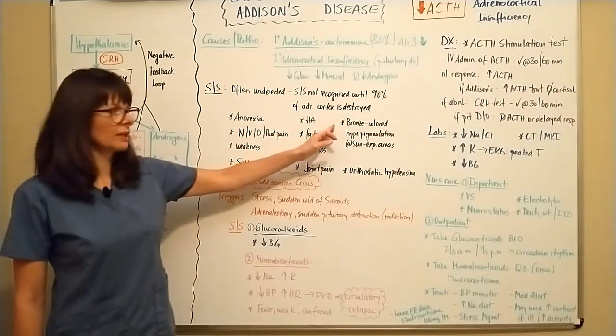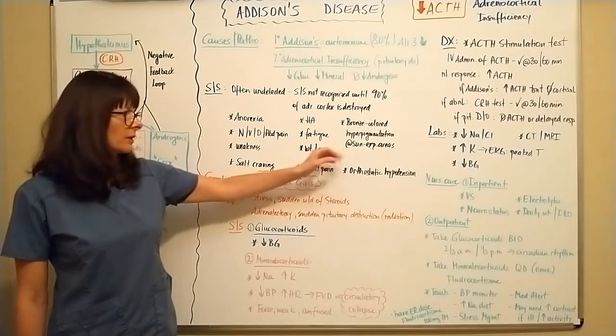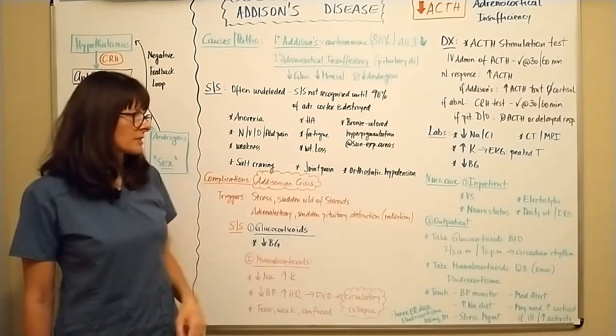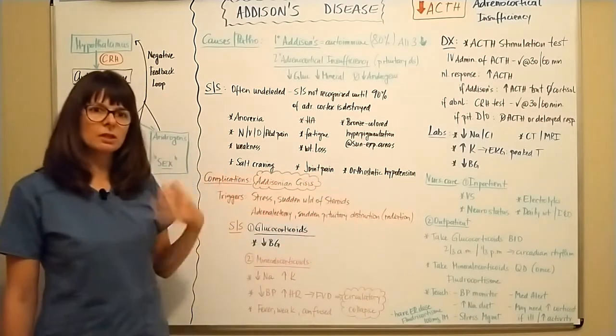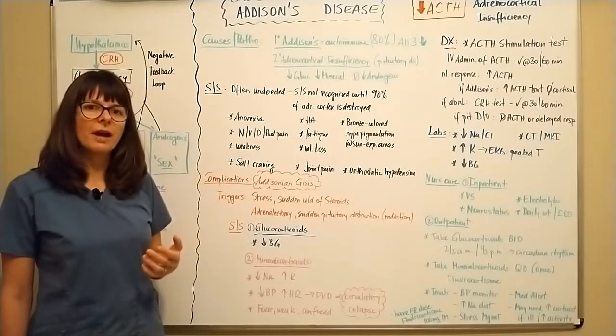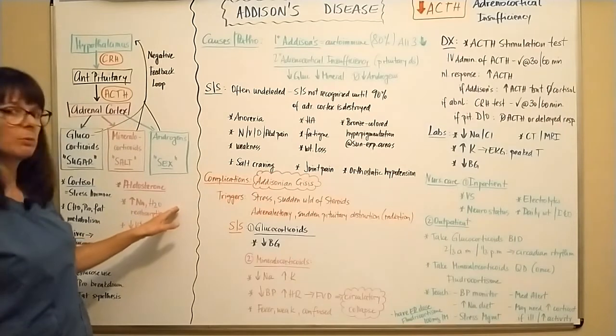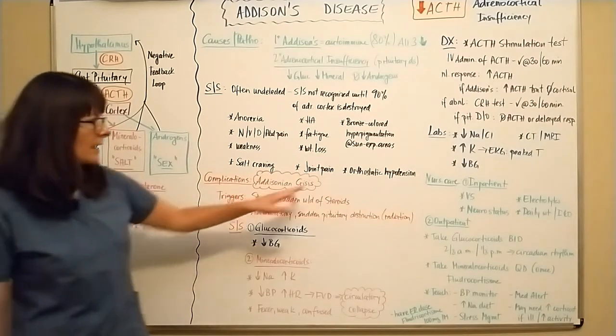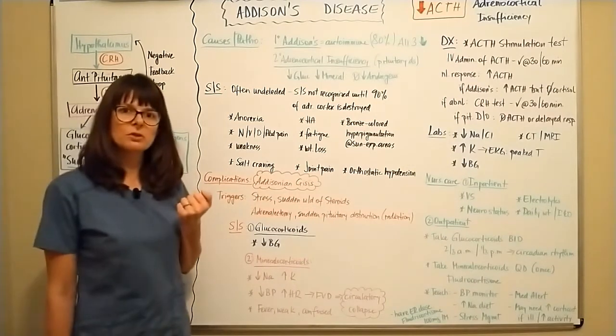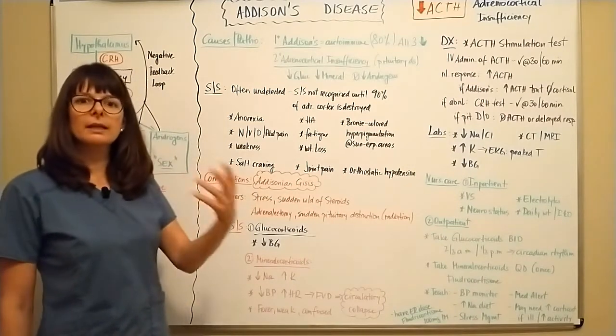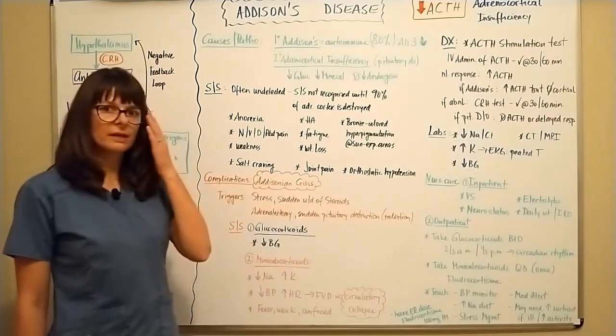And then a very significant finding: bronze colored hyperpigmentation at sun exposed areas, as well as orthostatic hypotension. And these here, salt cravings and orthostatic hypotension can certainly be due to a lot of other disorders, but salt cravings here happens because we're now not able to preserve the salt and orthostatic hypotension because with being unable to preserve the salt and water, it'll lead to fluid volume deficit. Therefore, the patient can have orthostatic hypotension.